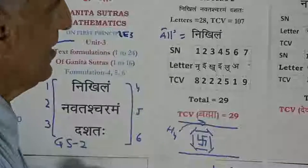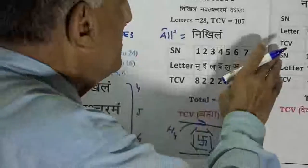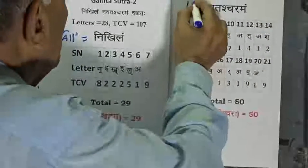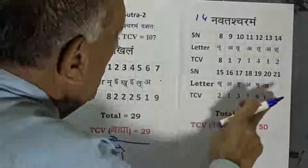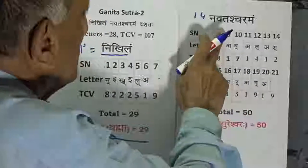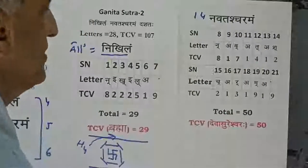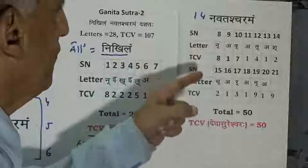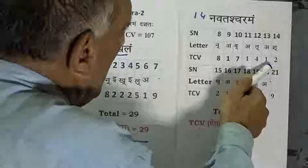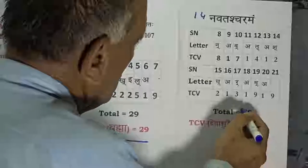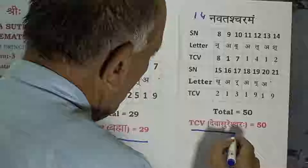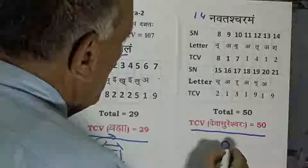When it is to be complemented with other formulations, let us revisit the formulation Navasthacharamam. This is a text of 14 letters, serial numbers 8 to 21 in continuity of serial numbers 1 to 7 of the Niklim letters. These 14 letters accept the TCV values 8, 1, 7, 1, 4, 1, 2, 2, 1, 3, 1, 9, 1 and 10, with a summation value of 90. It is blissful to note that this value 50 is the parallel TCV value of Deva Sureshwar, meaning the transcendental Lord Shiv.